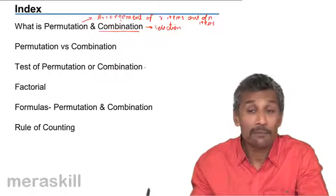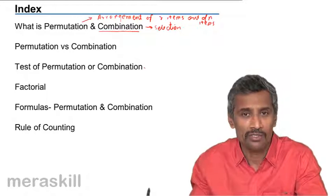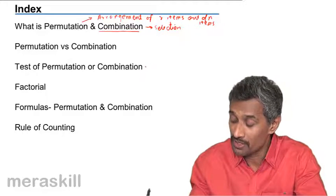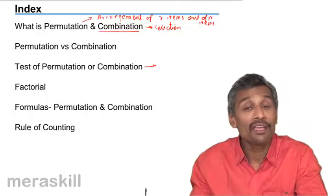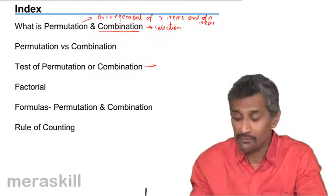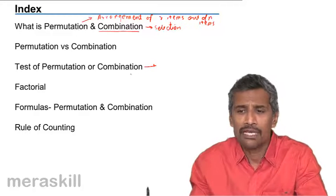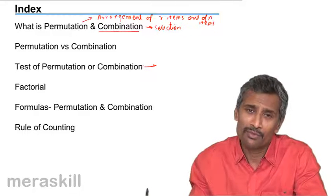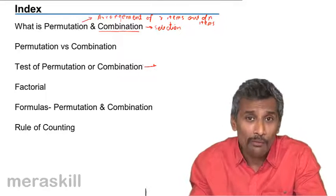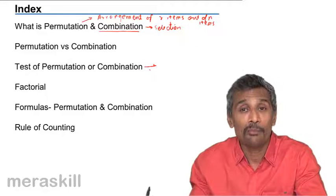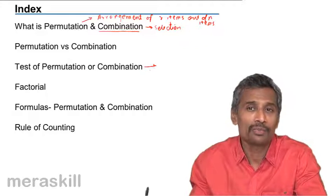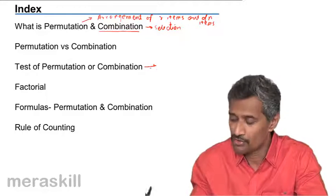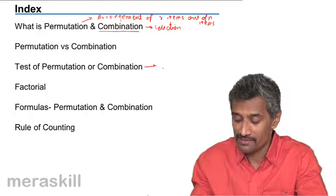We'll be taking up some real examples - about seven to eight of them - to understand the test of permutation or combination. Here's something I would like you to do: sometimes during the presentation, I might ask you a particular question, either while writing or orally. It would be nice if you pause the video, try to answer the question, and then restart the video to check whether what you said was right or wrong.